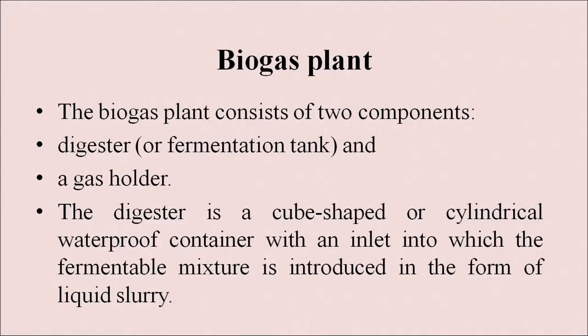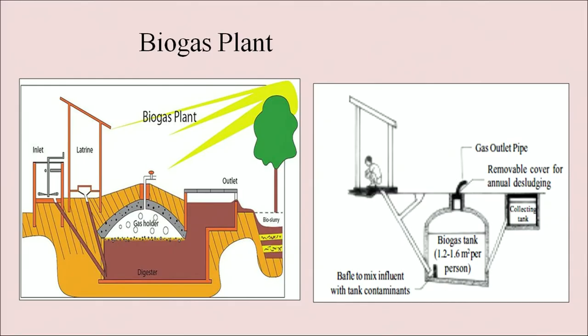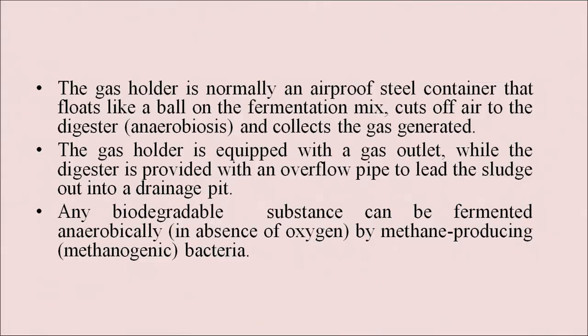The biogas plant consists of two compartments: the digester or fermentation tank and the gas holder. The digester is a cube-shaped or cylindrical waterproof container with an inlet into which the fermentable mixture is introduced as a liquid slurry. The gas holder is an airtight steel container that floats on the fermentation mix, cuts off air to the digester and collects the gas generated. It is equipped with a gas outlet, while the digester has an overflow pipe to lead sludge into a drainage pit.